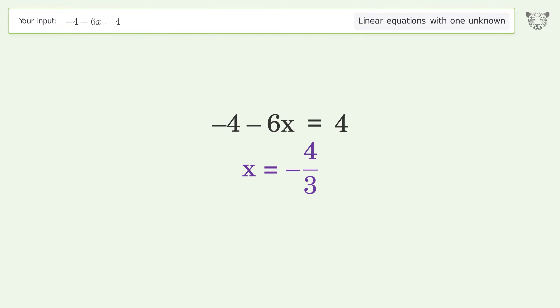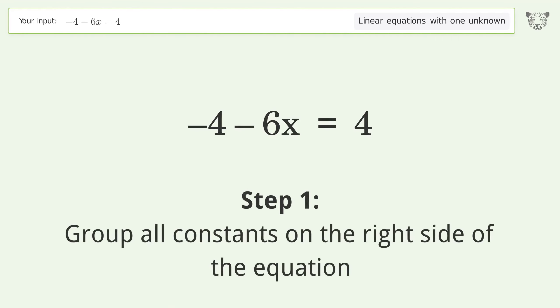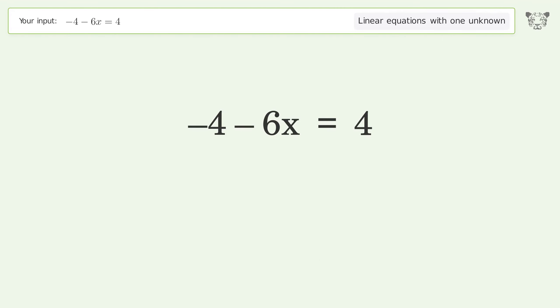Let's solve it step by step. Group all constants on the right side of the equation. Add 4 to both sides. Group like terms. Simplify the arithmetic.